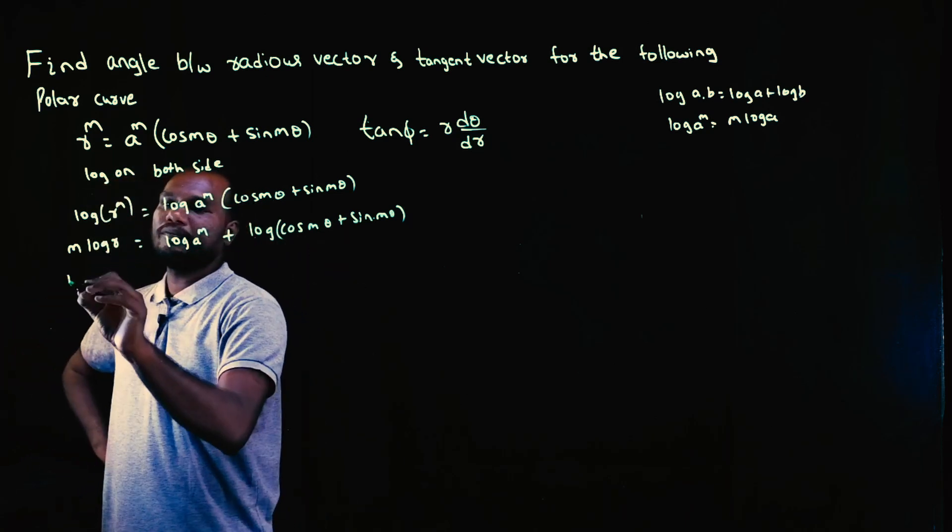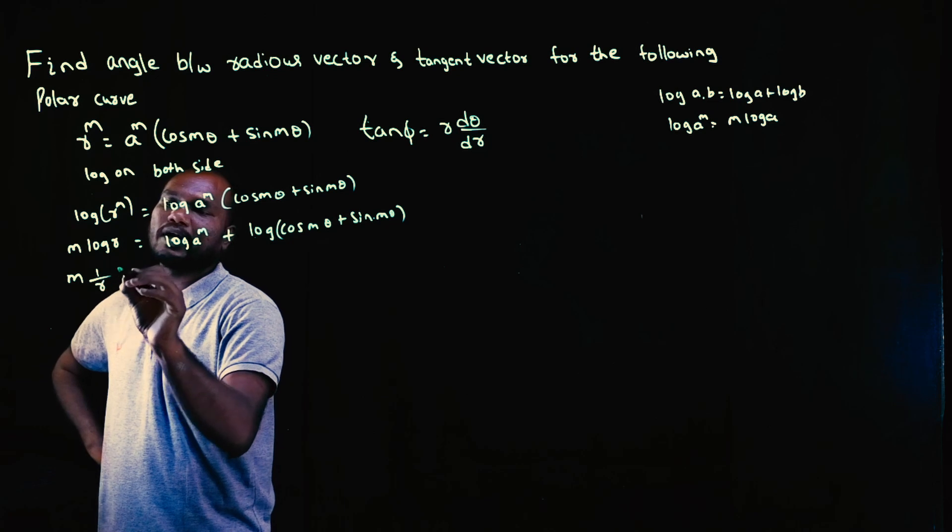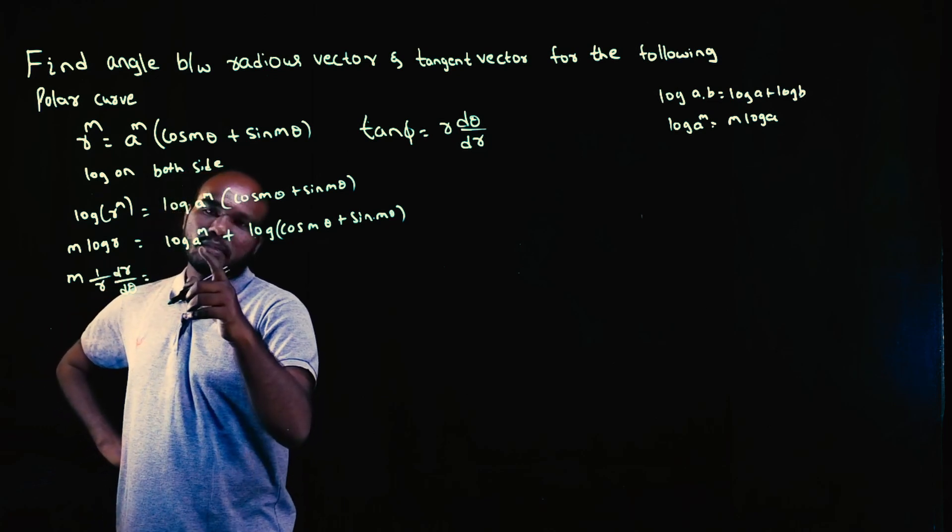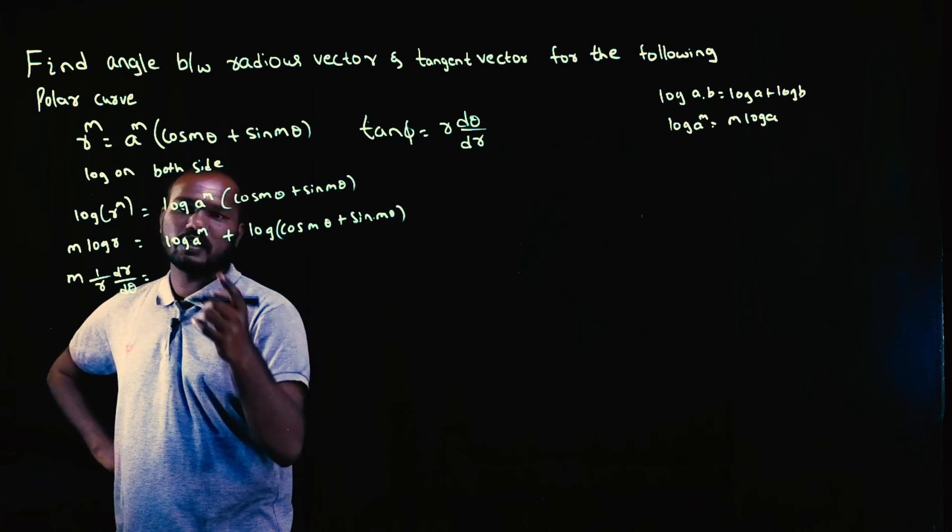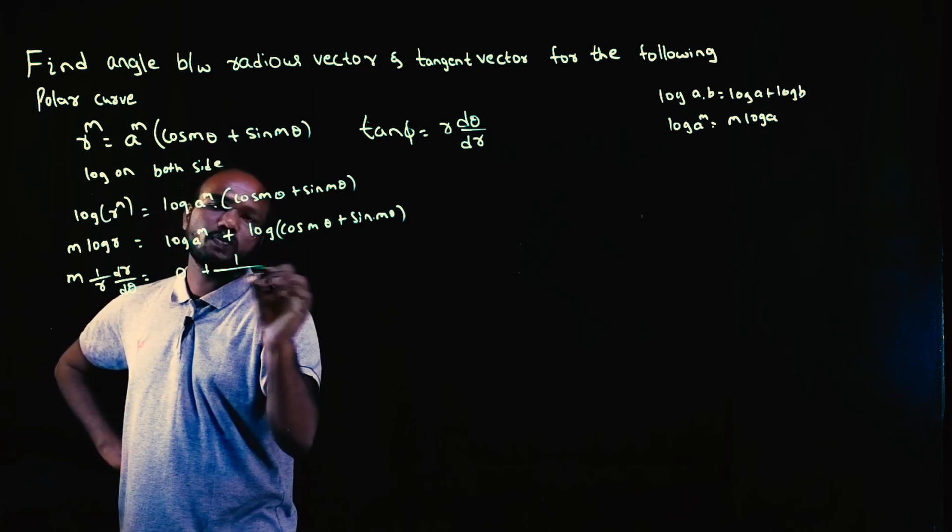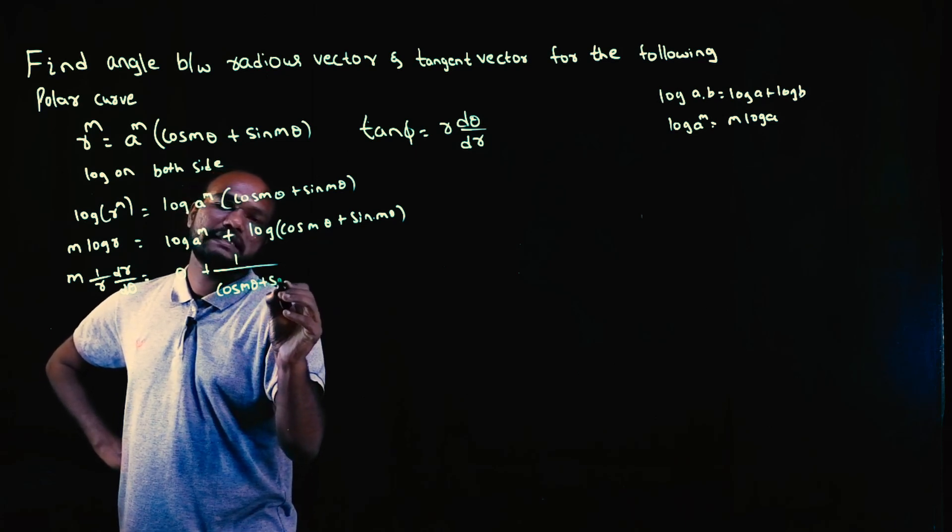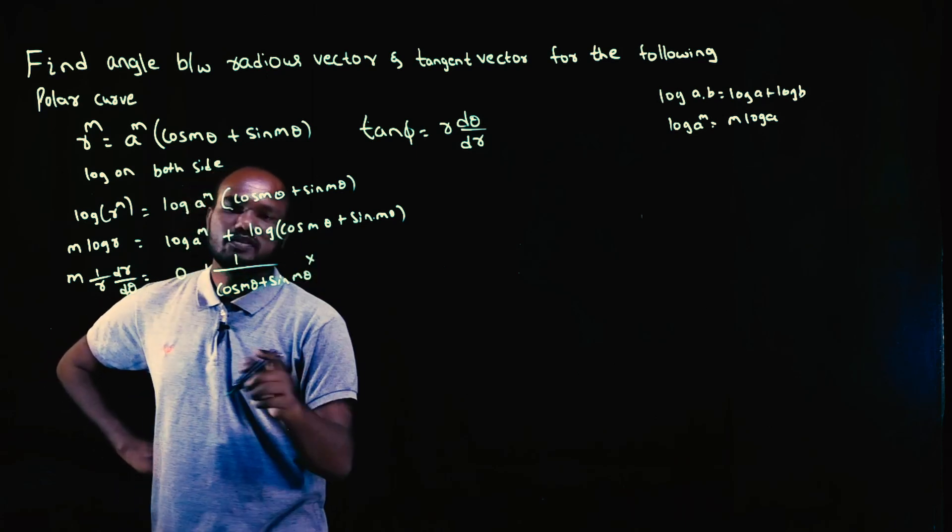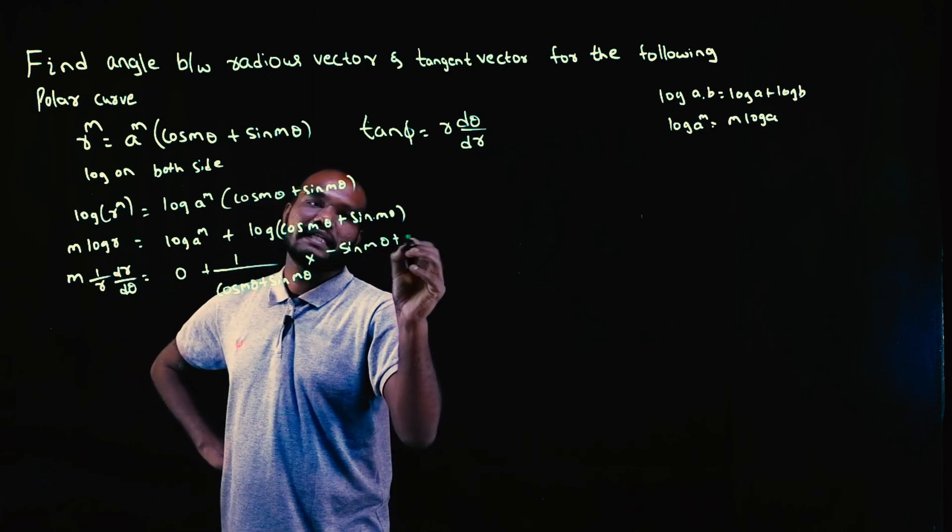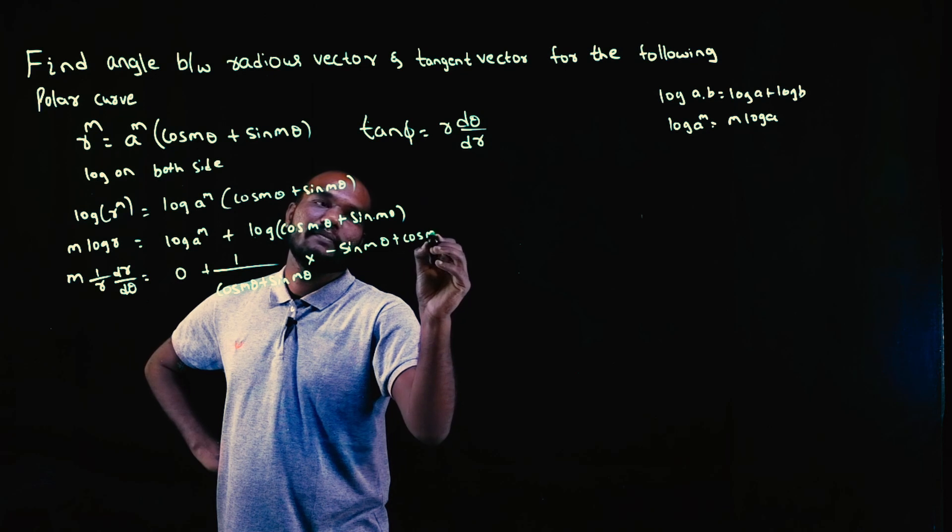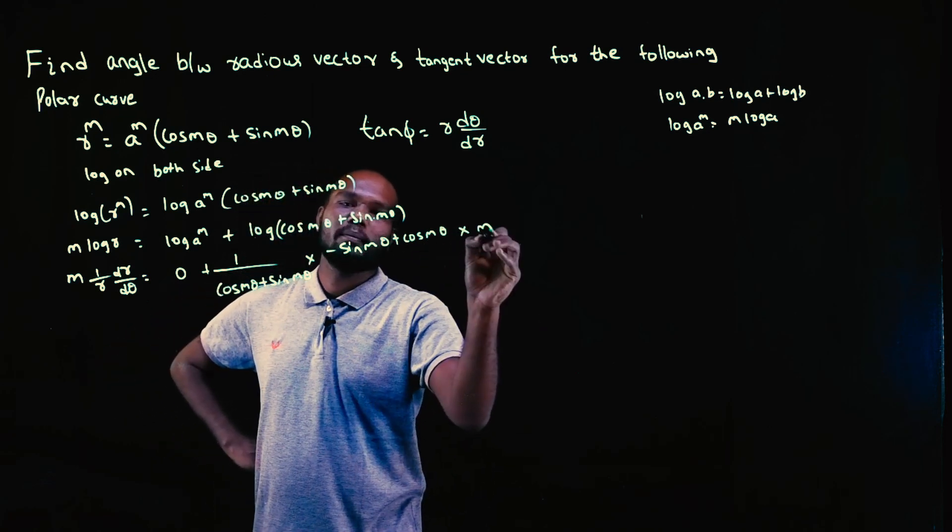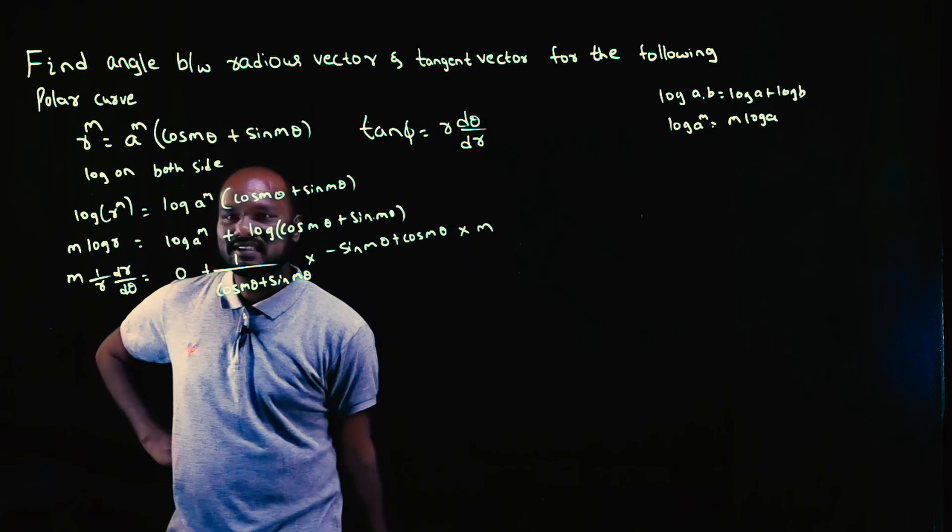Now let's differentiate. Since m is a number, log r differentiation is (1/r)(dr/d theta). Log a is a number so its differentiation is 0. The log term differentiates to 1/(cos m theta + sin m theta) times (-sin m theta + cos m theta) times m.